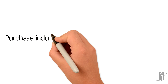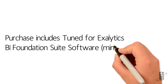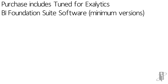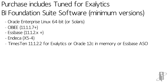When you buy an Exalytics, the machine does not ship with any software — you install all the software yourself, with separate licensing. You can install any of the BI Foundation Suite software, Oracle Linux 64-bit, or Solaris on the T series. The minimum OBIEE version is 11.1.1.7, with support for 11.1.1.9 or 12c. For Essbase, the minimum version is the 11.2.x series. TimesTen, which is an in-memory database, requires 11.1.2.2 or higher, or you can use Oracle 12c In-Memory, or Essbase ASO for caching.